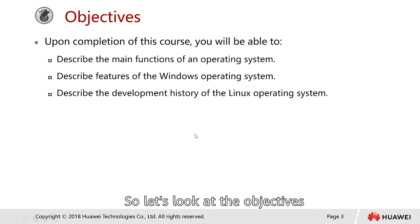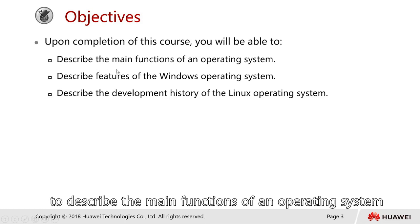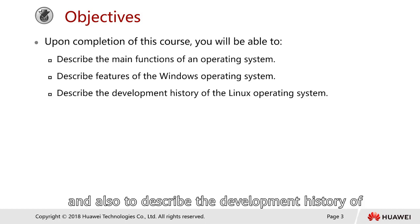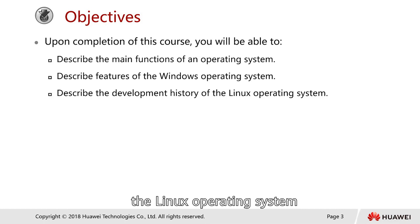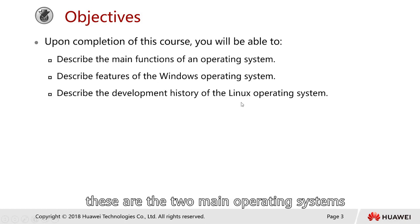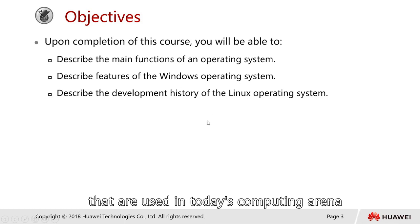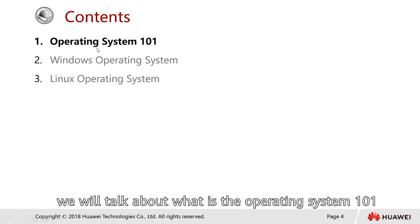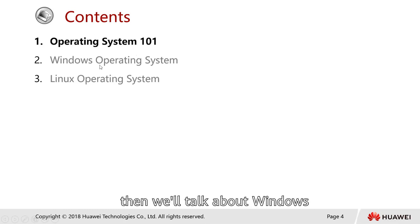Let's look at the objectives. Upon completion of this course, we should be able to describe the main function of an operating system, describe the features of the Windows operating systems, and also describe the development history of the Linux operating system. These are the two main operating systems used in today's computing arena. We will talk about what an operating system is — the basics — then Windows, and also Linux.